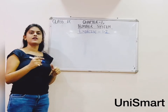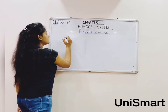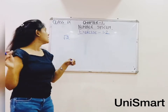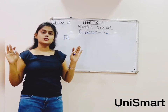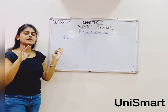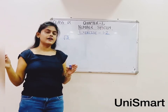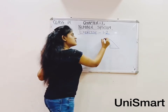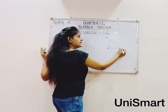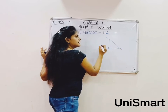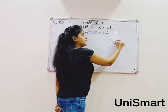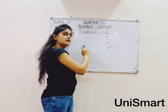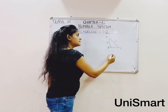Now I'm going to show how to make the number line of an irrational number. Suppose I have root 2 and I need to represent it on the number line. To place root 2 on the number line, we need to create a right angle triangle on the number line. Suppose the points are A, B, and C, where AC is the hypotenuse, AB is the perpendicular, and BC is the base.